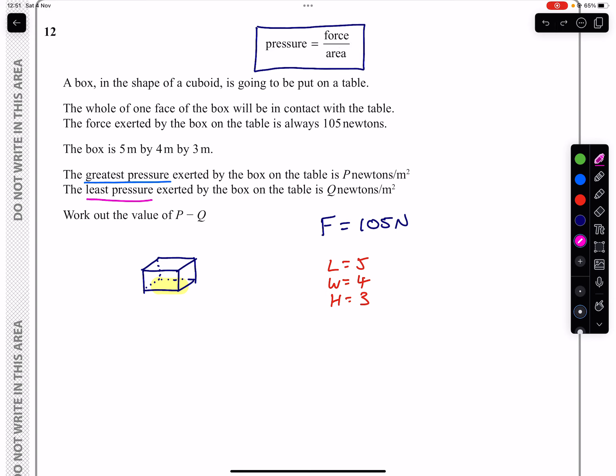So what we're looking for here is there are three ways that we can position the box on the table. Two of those ways we're interested in: the one that gives the smallest area on the bottom and the one that gives the biggest area on the bottom.